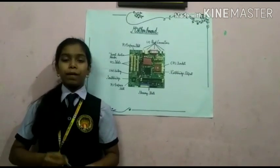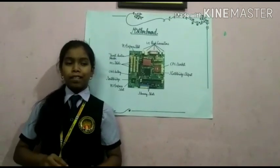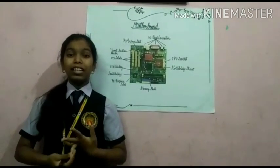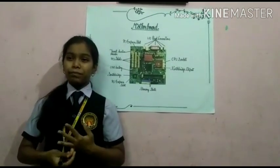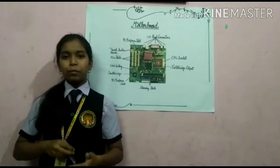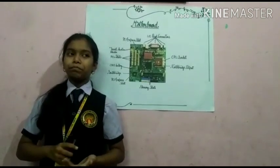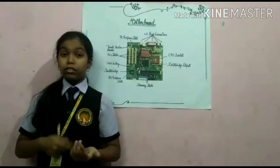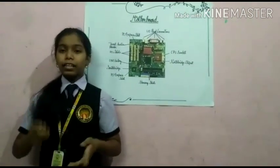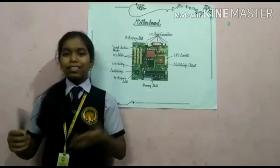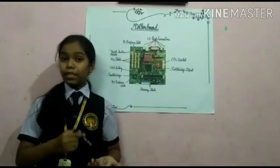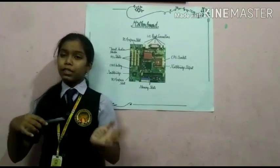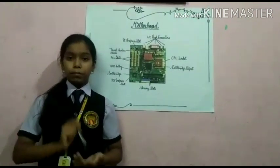The motherboard combines and connects all the crucial parts of the computer. Some of the important parts it connects are the CPU, the memory slots, and the input and output devices — like keyboard, mouse, printer, etc. — which are connected with wires. The wires are connected to the cabinet, and inside the cabinet, they are specially connected to the motherboard.